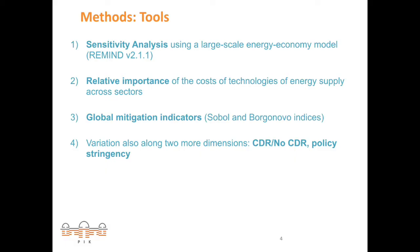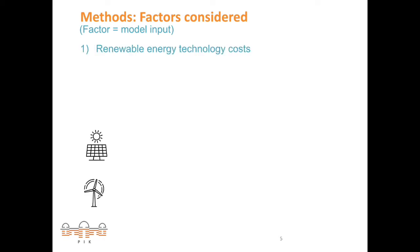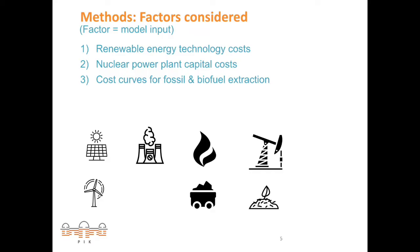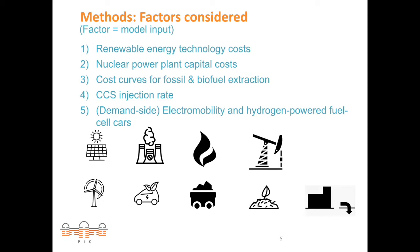To broaden the solution space, we will also look into two more dimensions: cases with and without carbon dioxide removal, and with increasing levels of policy stringency. The inputs of the sensitivity analysis, which are called factors, will be energy technology costs. We look at renewable energy technology costs, nuclear power plant capital costs, cost curves for extraction for fossil fuels and biofuels, different levels of injection rates for carbon capture and storage, and from the demand side, costs of battery electric vehicles and hydrogen-powered fuel cell cars.